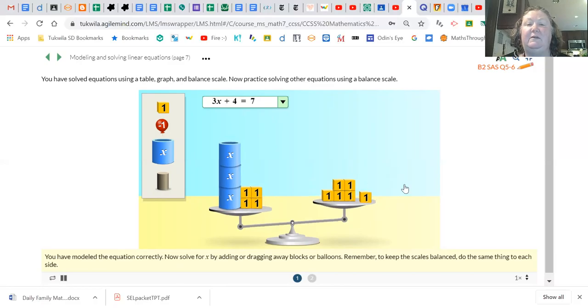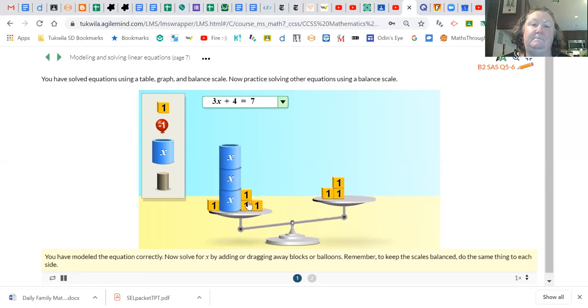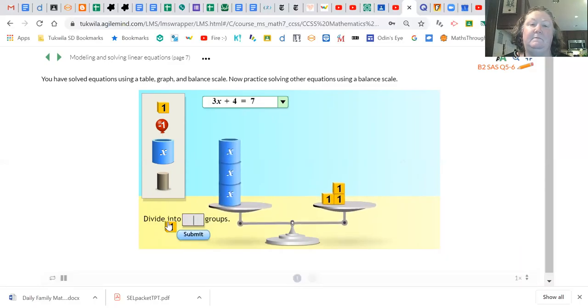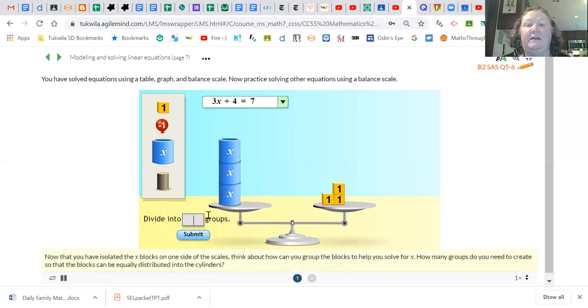And then you can check the model, and then you can use this to try to solve this equation. Because we know this is the equation 3x plus four equals seven. If I take away four from both sides, I'm going to divide into how many groups? Three. And what's going to be left?